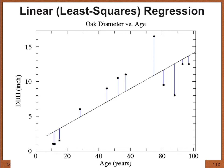I'll describe the technique just in general terms so you understand at least where the name comes from. These blue lines indicate the difference between actual value and predicted value. Every point on the regression line is a predicted value, because that line is simply a model that imitates or predicts real-life data. These points are the actual measurements, and there is no point that's exactly on the line, but this line indicates the general pattern. Some points are above the line and some are below — the points above have a positive difference and the points below have a negative difference.